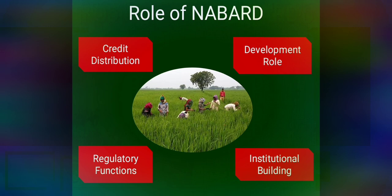In its regulatory function, NABAD inspects the working of RRBs and cooperative banks of all types except primary cooperative banks. It also inspects Apex Cooperative Marketing Federations and State Handloom Weaving Societies, which are financed on a voluntary basis. It is empowered to obtain any information or statements from the RRBs and cooperative banks.